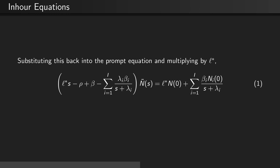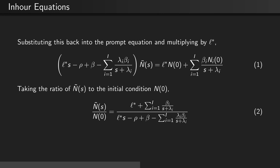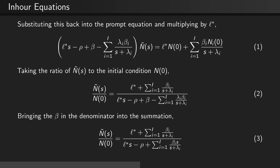Substituting the initial concentration of the i-th group back into the prompt equation and multiplying all terms by the mean neutron generation time yields the expression seen here. Taking the ratio of the Laplace transform of the neutron number density to the initial condition n(0) yields the ratio of the mean neutron generation time plus the sum over all delayed neutron groups of βᵢ divided by (s + λᵢ), all over the mean neutron generation time times the frequency minus the reactivity plus the delayed neutron fraction minus the sum over all delayed neutron groups of λᵢβᵢ over the frequency plus the delayed neutron decay constant. Bringing the delayed neutron fraction in the denominator back into the summation, we see the following expression.